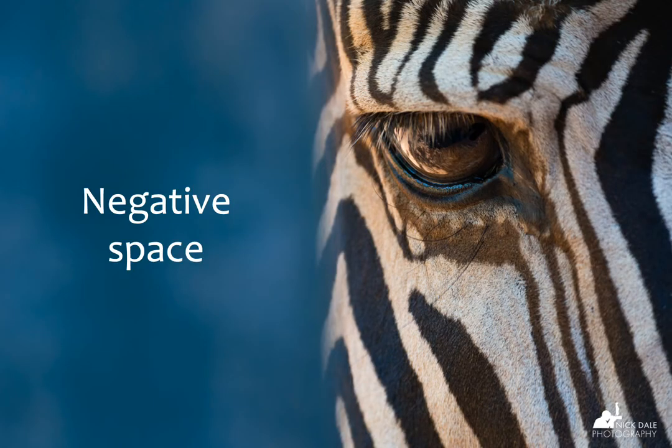Negative space is another idea people often talk about. It's essentially just space — the idea is that you can balance a frame by having a subject on one side and space on the other. The idea of balance is not in terms of weight or mass; it's just aesthetic or visual balance. The focus of this image, in every sense, is the eye of this Grevy's zebra, but on the left-hand side there is negative space.